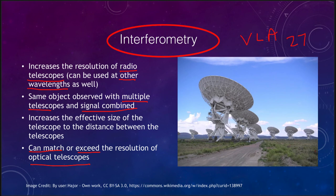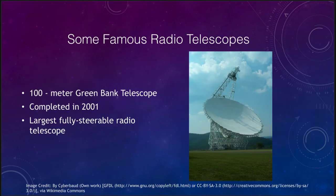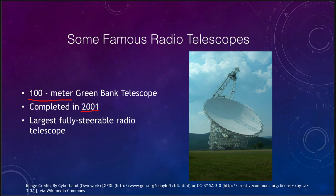In terms of telescopes with just one dish, we have the 100-meter Green Bank Telescope, which was completed in 2001. So 100 meters across — about the size of a football field — that is the largest fully steerable radio telescope. You're actually steering something larger than a football field and pointing it at different parts of the sky.